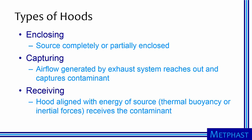I will spend some more time on hoods as they are the point of entry into a local exhaust ventilation system. There is a wide variety of hoods available, with selection depending strongly on the operation being ventilated. We will review hoods in the following three categories: enclosing hoods, which completely or partially enclose the source of the contaminant; capturing hoods, which use the air flow of the exhaust system to reach out and capture the contaminant; and receiving hoods, which are aligned with the energy of the source that helps them receive the contaminant.